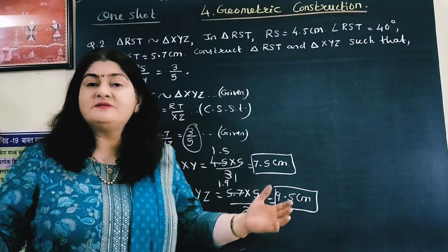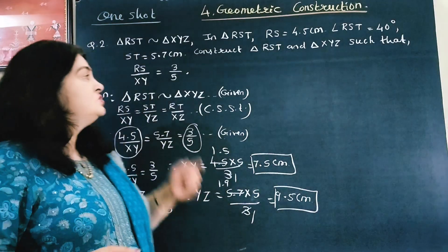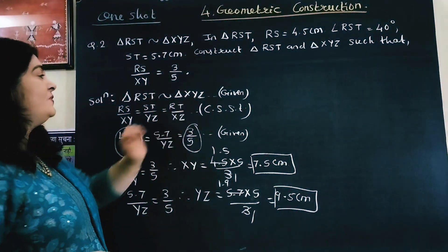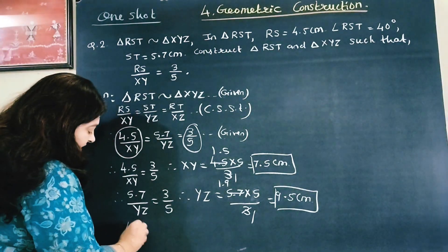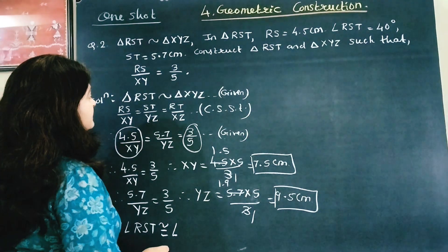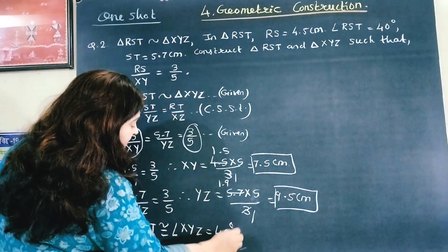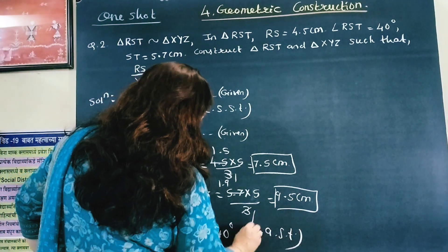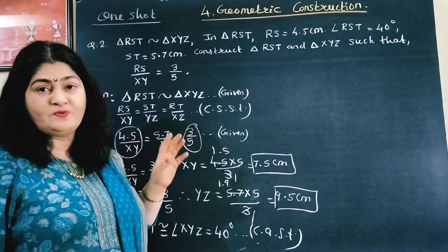Since the two triangles are similar, corresponding angles are congruent. Angle RST is 40 degrees, so angle XYZ will also be 40 degrees — corresponding angles of similar triangles. Now first of all let us draw triangle RST and then triangle XYZ.